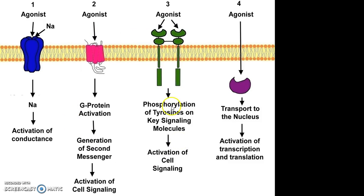The third type is the enzyme-linked receptor, also called the tyrosine kinase receptor, whereas the fourth type is the nuclear receptor. Nuclear receptors — that is intracellular receptors — directly activate the process of transcription and translation, that is protein synthesis. The tyrosine kinase enzyme-linked receptor leads to phosphorylation of tyrosine kinase, which leads to activation of cell signaling.